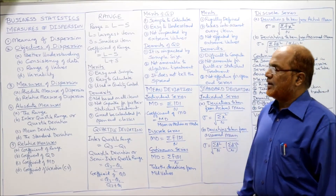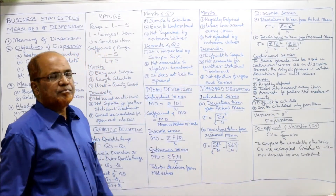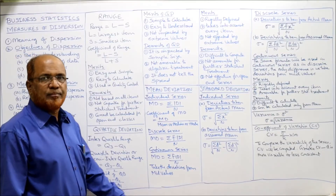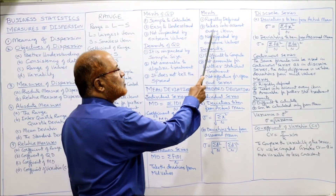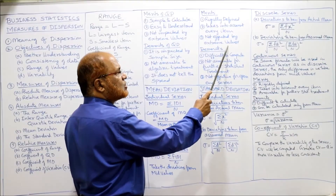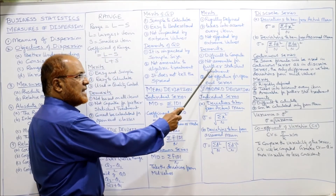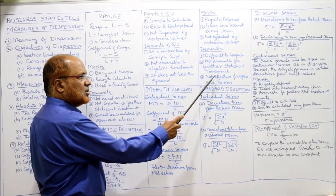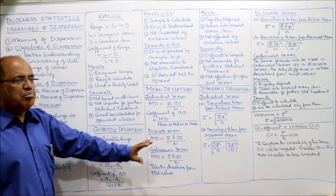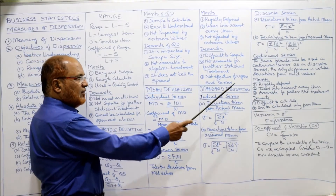Merits of mean deviation: it is rigidly defined, meaning there are no different opinions and the same theory applies. It takes into account every item and is not affected by extreme values. Demerits: it is difficult to compute, not amenable for further statistical treatment, and not effective for open-ended classes.